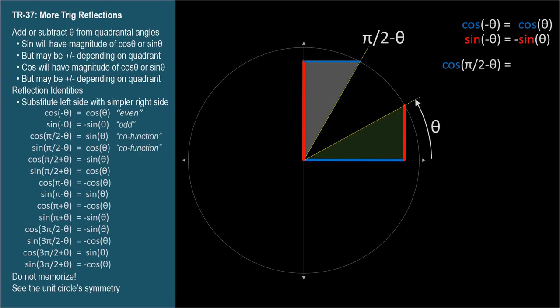That short distance is the same as sine theta. So cosine of pi over 2 minus theta equals sine theta — always. Whenever you see cosine of pi over 2 minus theta in an expression or proof, you can always simplify it to sine theta.